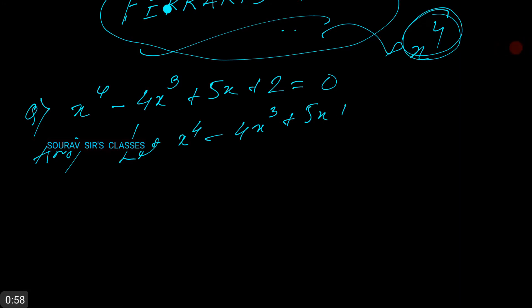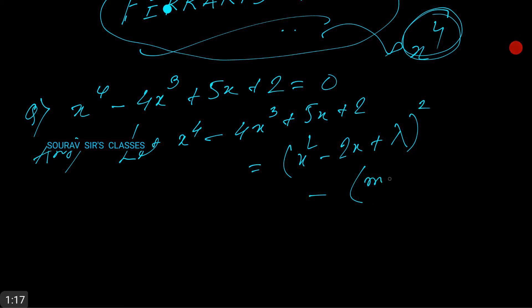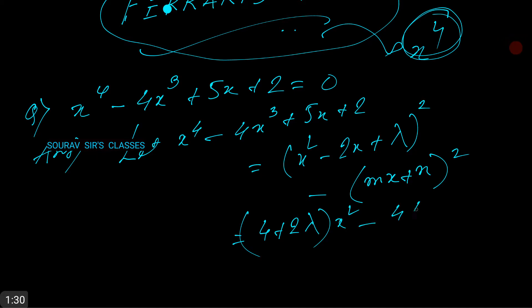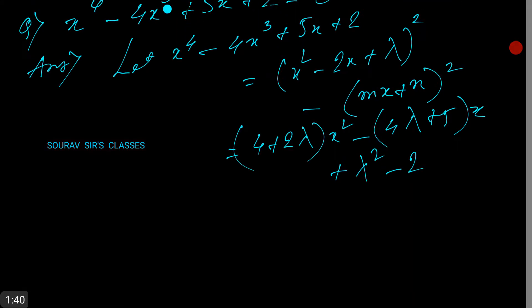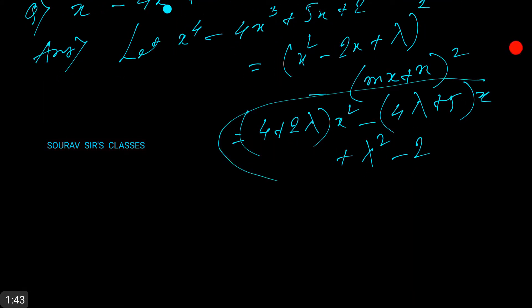We express x⁴ - 4x³ + 5x + 2 as (x² - 2x + λ)² minus (mx + n)², which expands to give terms involving (4 + 2λ)x², (-4λ + 5)x, and (λ² - 2). This entire expression must be a perfect square.